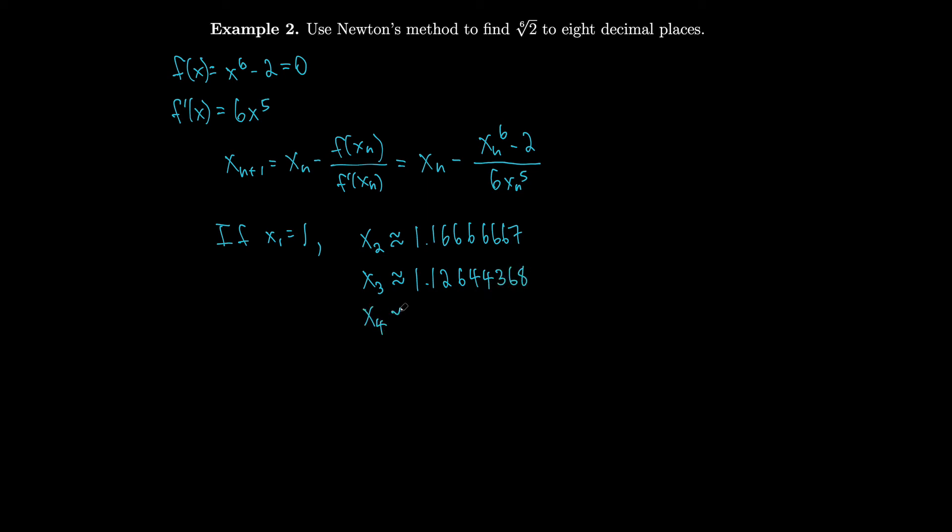We plug in x₃ and we get that x₄ is 1.12246205. Then we plug in x₄ to get x₅ as 1.12246205, and if we plug in to get x₆, then we also get 1.12246205.